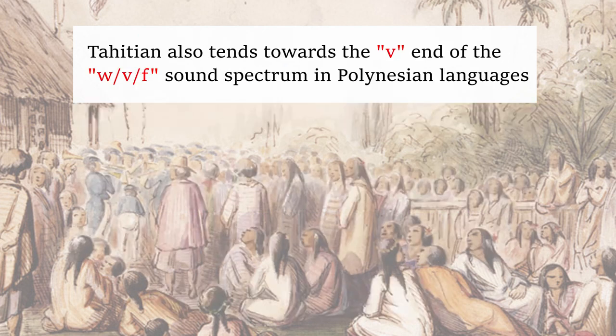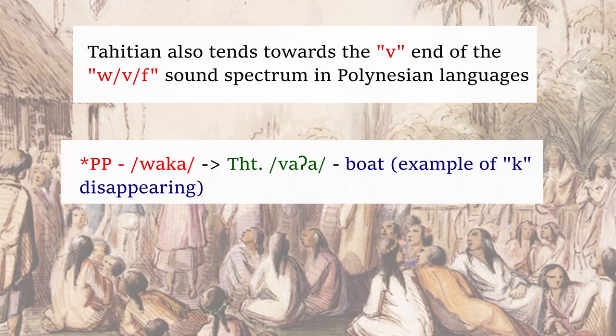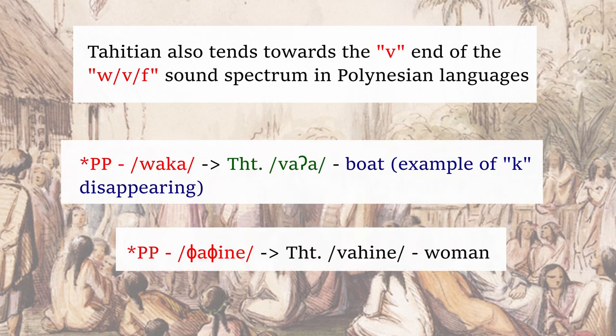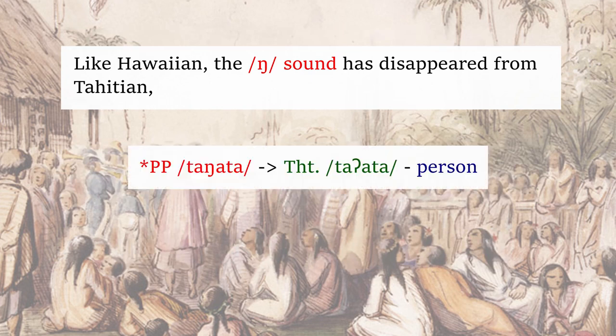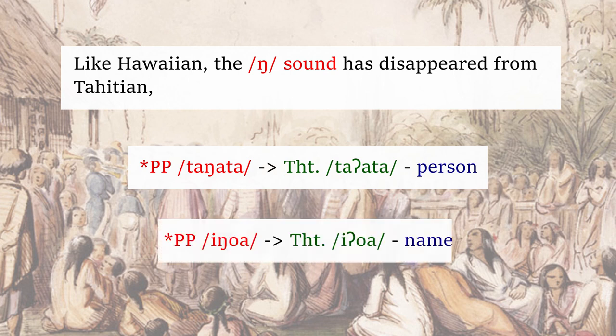Tahitian also tends toward the V sound, away from the W sound, in Polynesian languages. Va'a, boat. Vahine, woman. Like Hawaiian, the N sound has disappeared from Tahitian. Taata, from tangata, meaning person. Ioa, meaning name, from English.